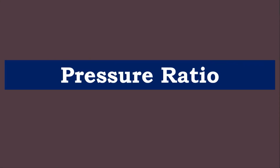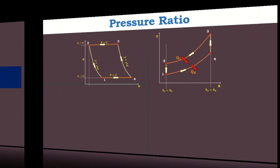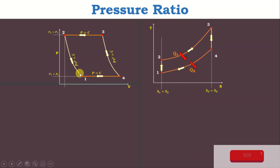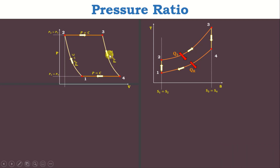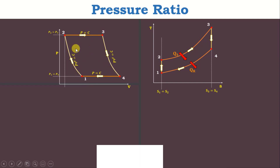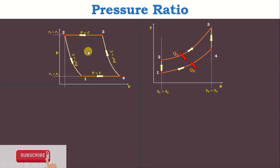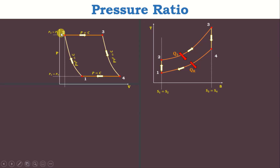First, we will discuss Pressure Ratio. A gas turbine consists of four major processes: process 1 to 2 is isentropic compression, 2 to 3 is constant pressure heat addition, 3 to 4 is isentropic expansion, and 4 to 1 is constant pressure heat rejection. During isentropic compression, there is a change in pressure, so the pressure ratio in the compressor is the ratio between maximum pressure to minimum pressure, i.e., Rp = P2 divided by P1.